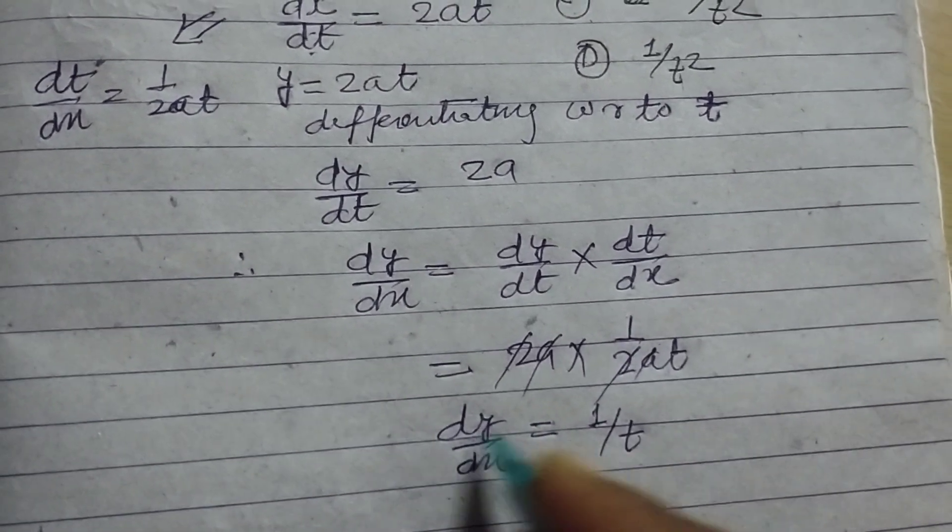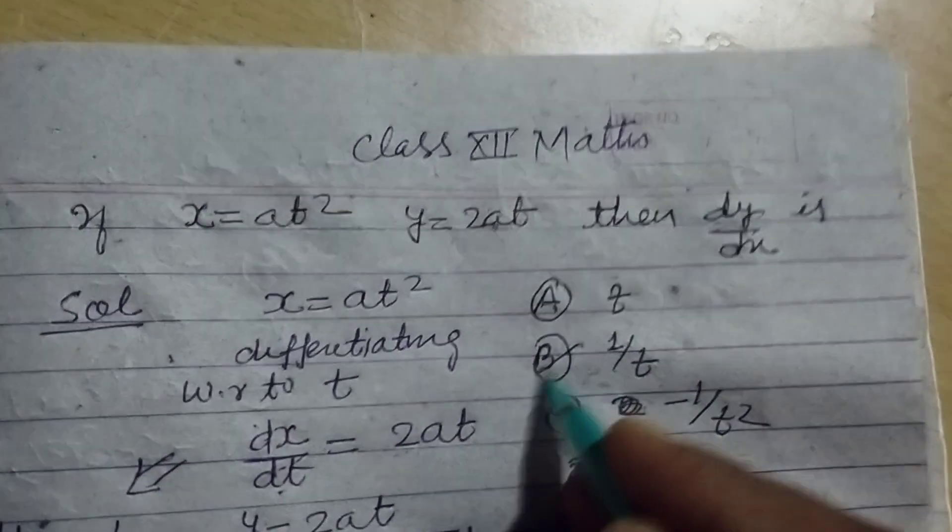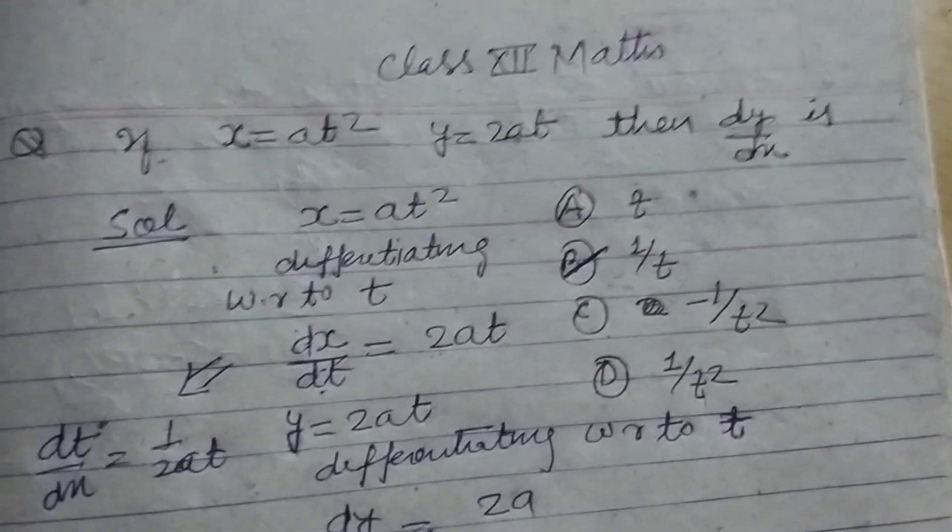So dy/dx equals 1 over t. This is our answer, which is found in option B. Therefore, option B of this question is correct.